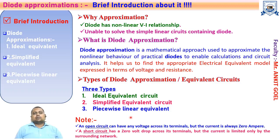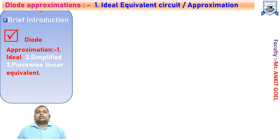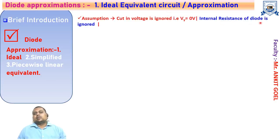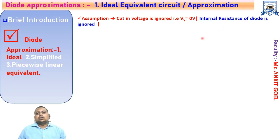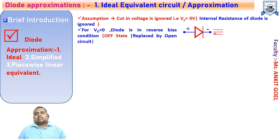Let us start with the first diode approximation — the ideal equivalent circuit. In this approximation, both the cutoff voltage as well as the internal forward resistance of the diode are ignored. We take the cutoff voltage as 0 volts. When the voltage across the diode is less than 0 volts, the diode operates in reverse bias with no current flow — it is in the off state. We model this behavior by an open circuit, meaning the ideal diode behaves as a perfect insulator.